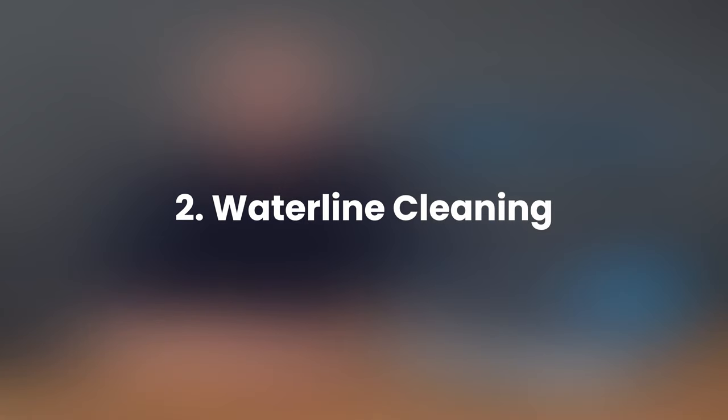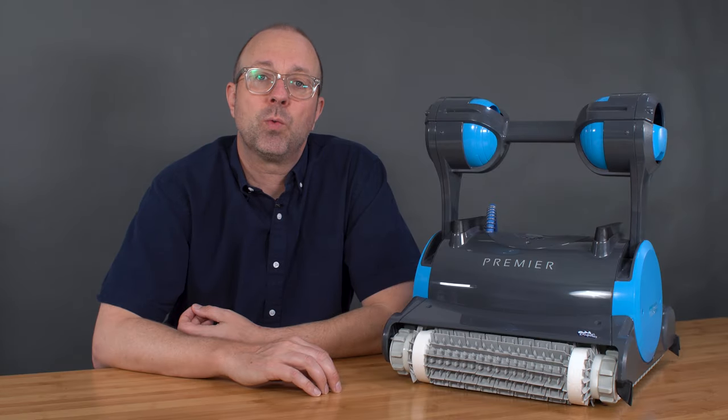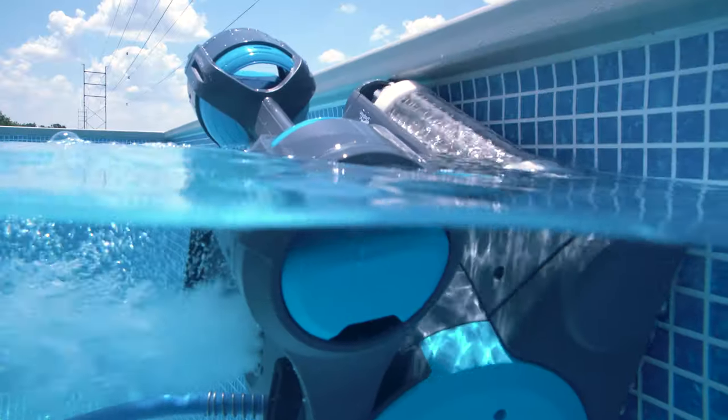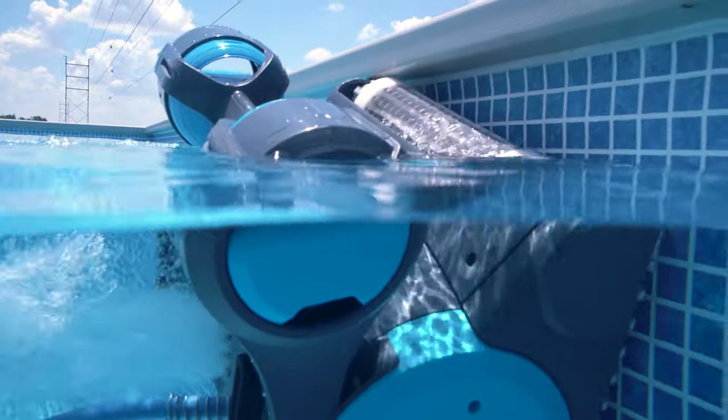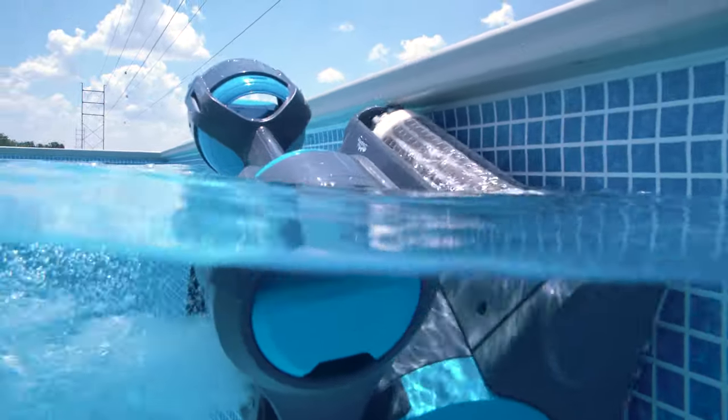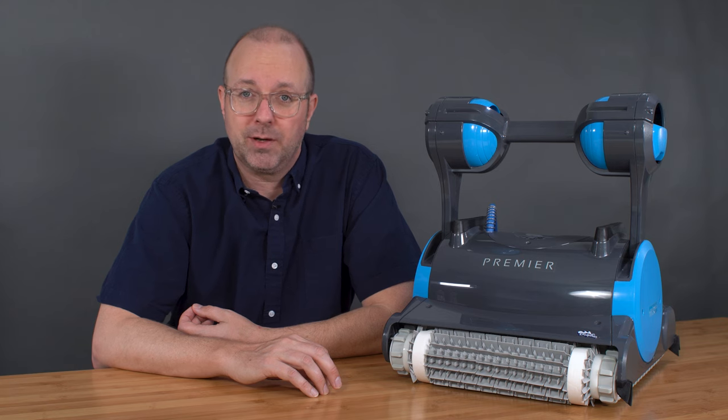Moving to the second absolutely essential item: waterline cleaning. This is something you want to pay close attention to. The waterline, also called the scum line, affects the overall health of your pool. This is a common area for the growth of biofilm. As I have said in my other reviews, this is another feature you won't just want, but you really need.